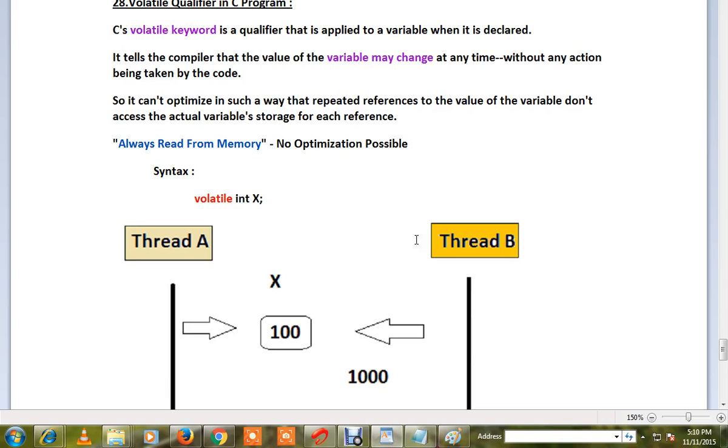Normal variables it will optimize to reduce the time, but for volatile it should always read from the memory so that you will get the latest updated or modified value in your variable.